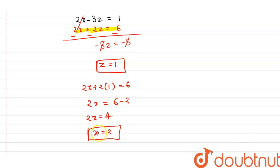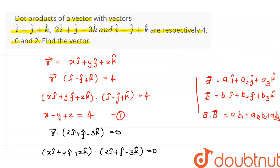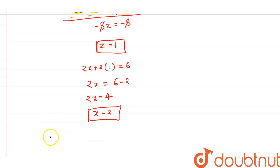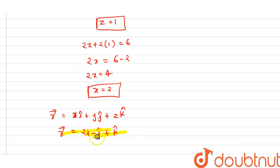We have found x equals 2, y equals minus 1, and z equals 1. The required vector r equals x i cap plus y j cap plus z k cap, which gives r equals 2 i cap minus j cap plus k cap. This is our required vector. Thank you.